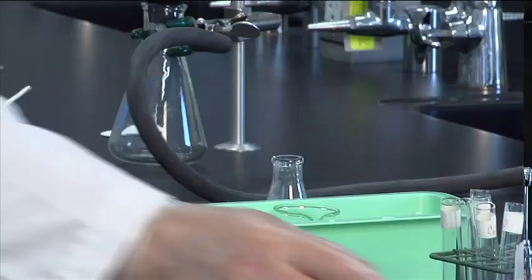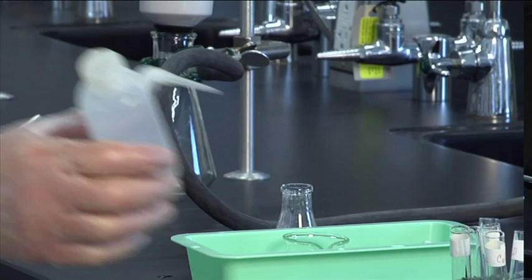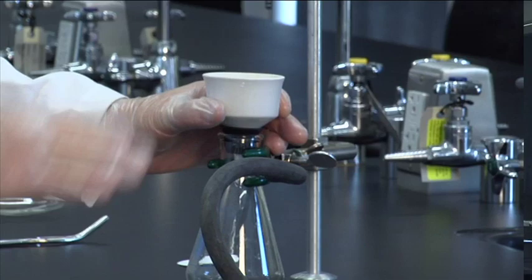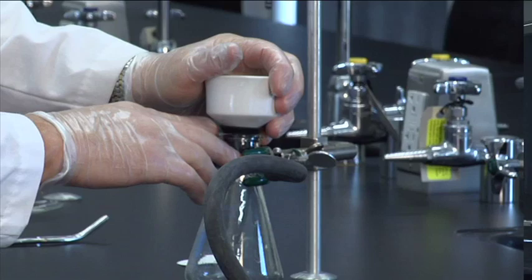All right. So I've got the vacuum on. One technique is to wet the filter paper with some DI water and that pulls the filter paper tight to the funnel. The funnel is tight to the rubber thing. The rubber thing is tight to the glass. We've got a nice tight vacuum here. So here we go.